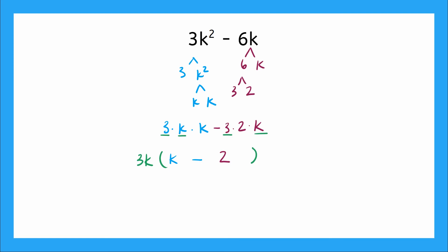And just to be sure, we can double check using the distributive property. 3k × k will give me 3k² minus 3k × 2 would give me 6k. Checks out? It does. So that's our real factored form.